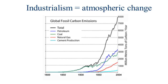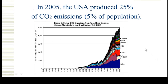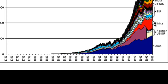As people have burned more and more fossil fuels, emissions have gone up. If we look at who's doing the emitting, back in 2005 the USA was number one, producing 25% of CO2 emissions with just 5% of the population. China has since surpassed us, but we shouldn't take too much glee in that because much of what is produced in China is consumed here. So if we measure it that way, we're still number one.